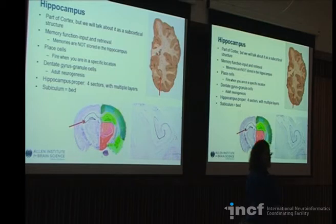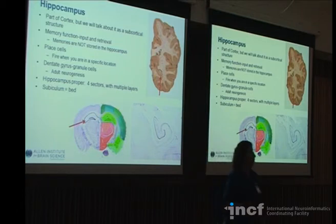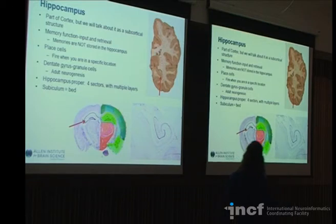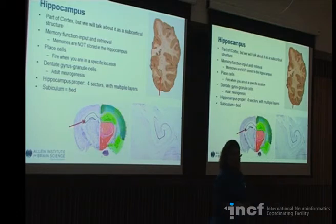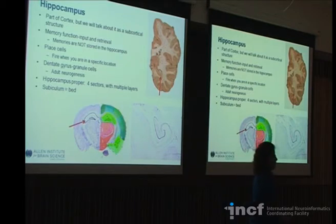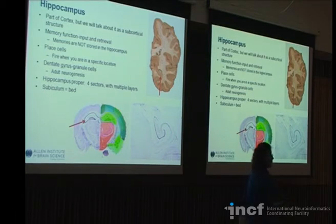The hippocampus is a cortical structure, though people tend to talk about it as its own entity. It is involved in memory function — input and retrieval. Memories are not stored in the hippocampus per se; you need the hippocampus to get memories in and to get memories back out. It's also the location of place cells, which are studied quite a bit — cells that fire when you're in a distinct position. There is a layer of dense granule cells called the dentate gyrus, and just underneath it in the sub-granular layer is where there is still some adult neurogenesis going on — new cells being born in the hippocampus.